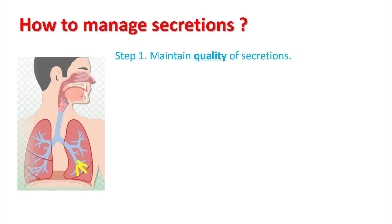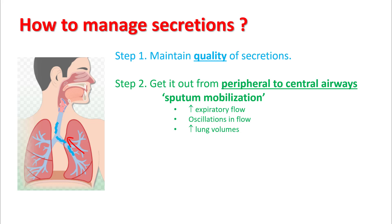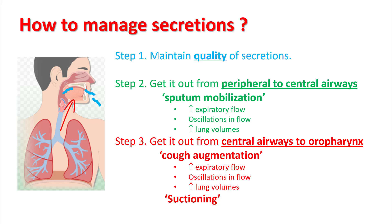There are three steps to manage any secretion. Step one is to maintain the quality of secretions. Step two is to get it out from peripheral airways to central airways — a process we call sputum mobilization. Step three is to get it out of central airways to the oropharynx or outside the glottis, achieved by cough augmentation or suctioning. The three basic principles behind these methods are: increase expiratory flow, increase lung volumes, and use oscillations during the flow.